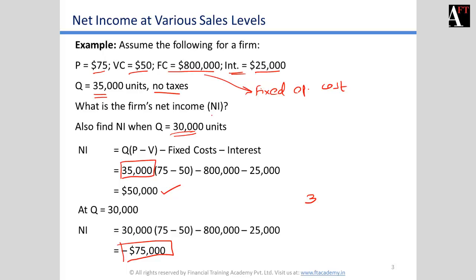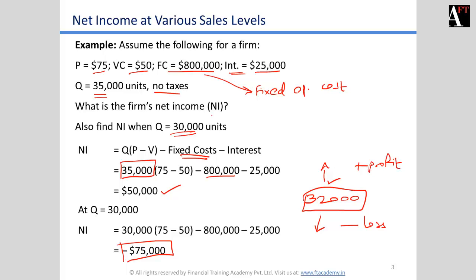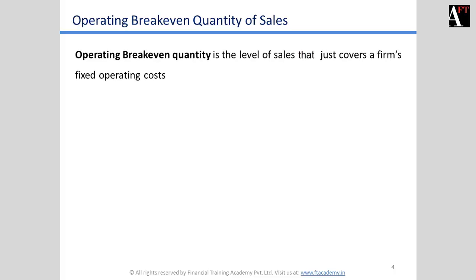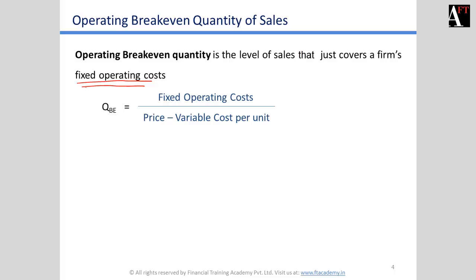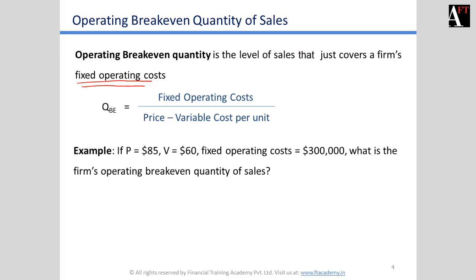As seen in the previous example, the breakeven quantity is 32,000 units. At the operating level, where we cover the fixed cost of $800,000, breakeven is at 32,000 units. If operational quantity is below 32,000 units, the business suffers a loss; if above 32,000 units, the business is profitable. When calculating operating breakeven, we cover only fixed operating costs, whereas covering other costs results in a different breakeven quantity.